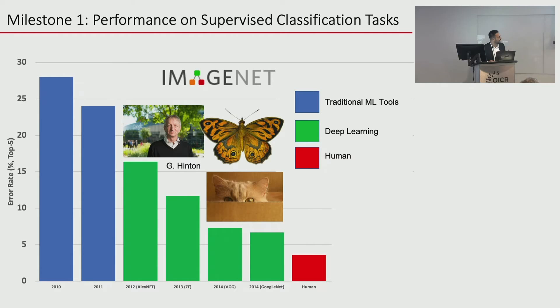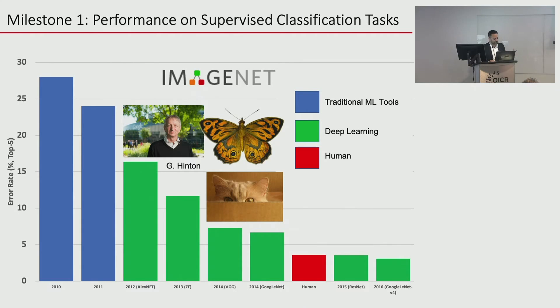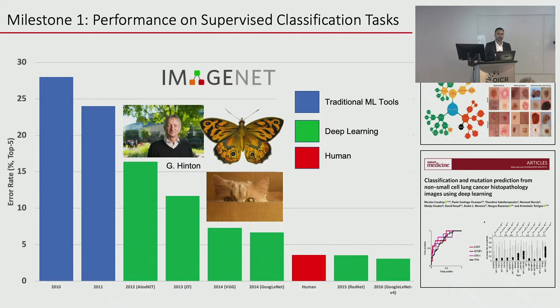About three years ago when ImageNet concluded, computers were just as good as humans at recognizing those 1,000 different classes — cats, dogs, airplanes. People in the medical field caught on because a lot of important decisions are made based on human interpretation. There's now a flood of papers on whether deep learning can improve the way we carry out medical diagnostics.